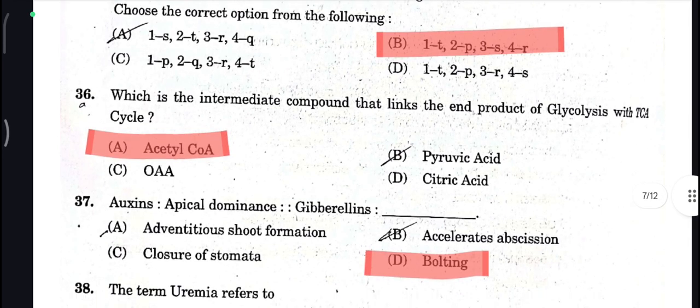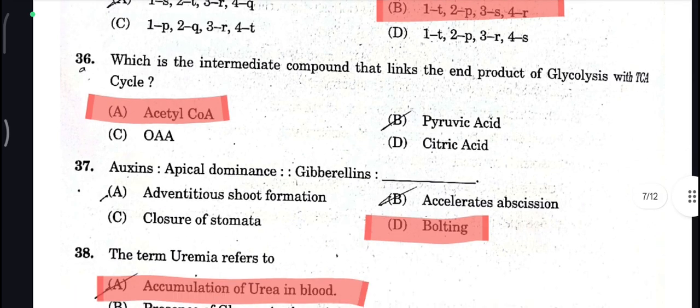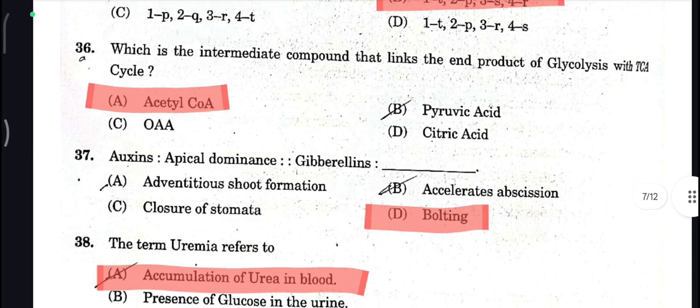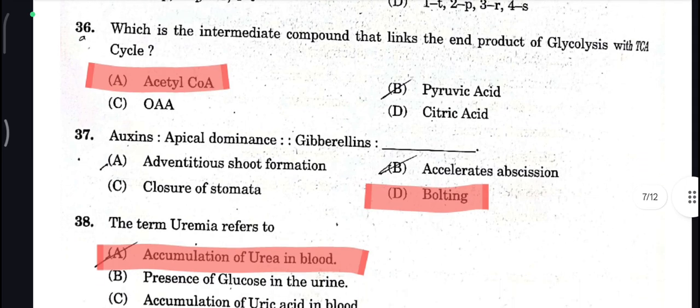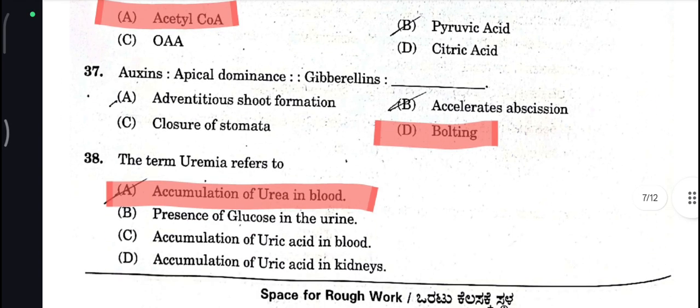Which of the following intermediate compound links the end product of glycolysis with the TCA cycle? That is Acetyl CoA — Acetyl CoA is your correct answer here.